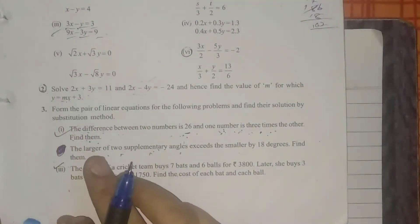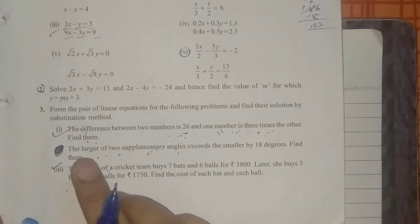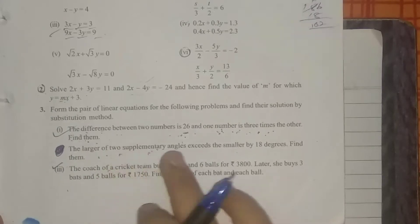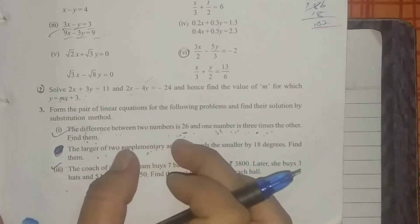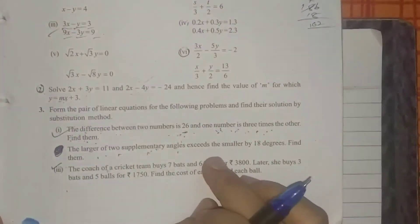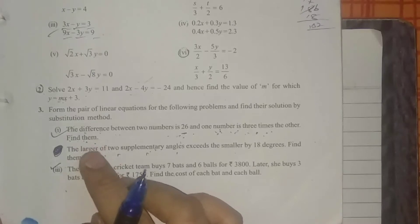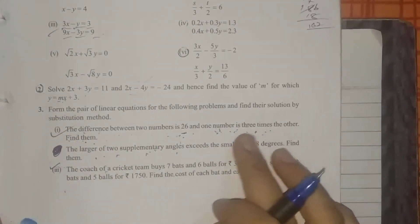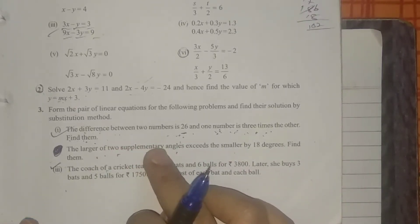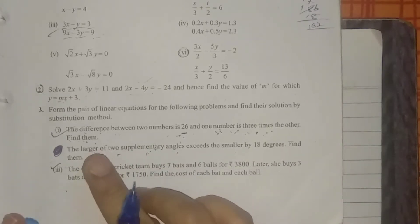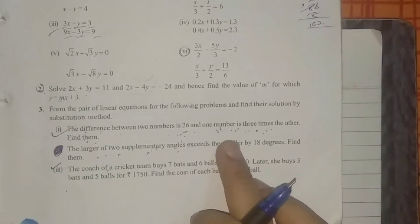The second part: the larger of two supplementary angles exceeds the smaller angle by 18 degrees. Find them. Two conditions are given here. The larger angle exceeds the smaller by 18 degrees, and both angles are supplementary. We will assume the larger angle is x and the smaller angle is y.